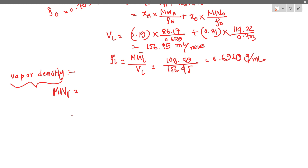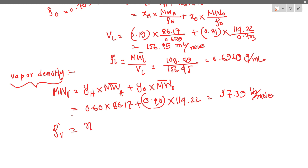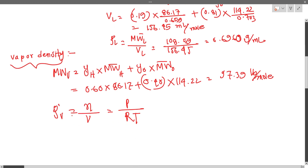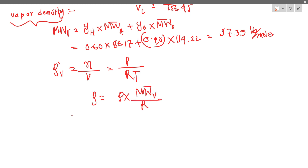For vapor density, we use the ideal gas law: PV equals nRT. So rho V equals molecular weight times P divided by RT. Using the vapor molecular weight of 97.39 grams per mole, we can compute the vapor density.